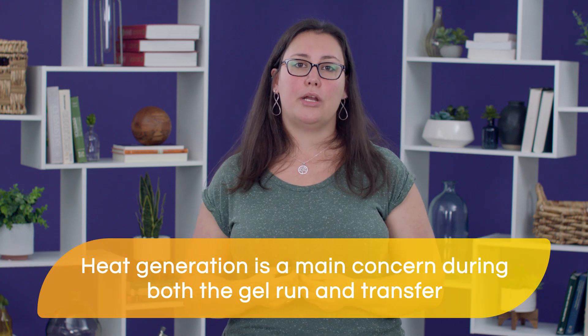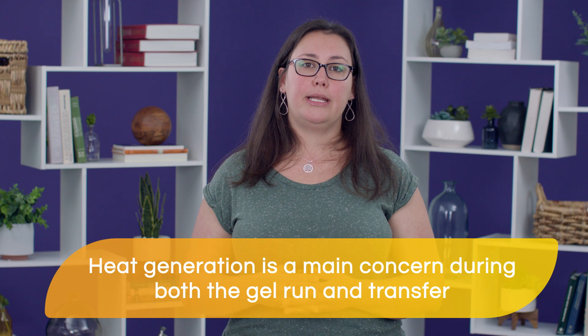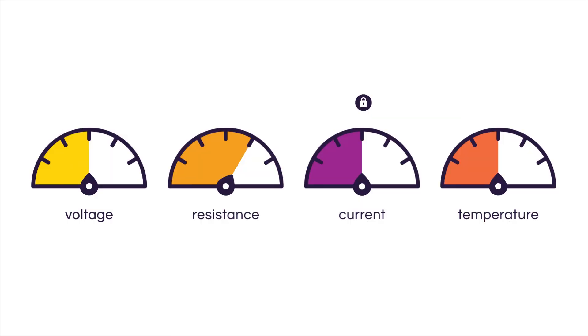In the science section, Darren has just reviewed with you what are the roles of voltage and current during the transfer step, which in actuality are virtually the same as for the SDS-PAGE, for running our gel. Those parameters are going to be virtually the same, including our main thing to consider, which is heat generation. That's going to be the one thing we need to keep an eye on — make sure we're not overheating our system. The one thing that's going to be slightly different is that resistance is probably not going to change much throughout the transfer process. It's going to be slightly high but fairly constant.